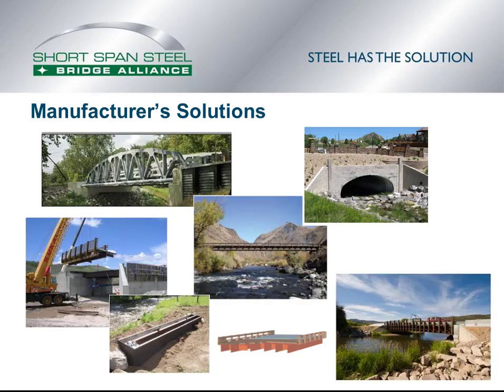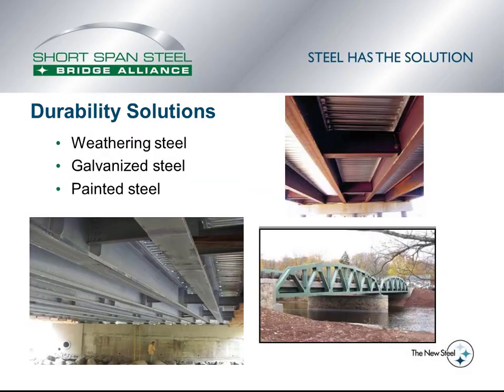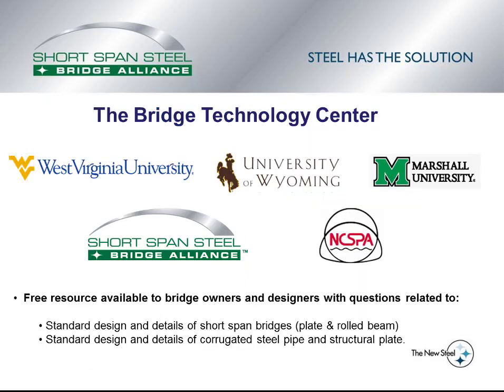Also included in an eSpan 140 solutions packet is information on corrugated steel pipe and structural plate standards, though that is not covered in this video. Shortspan Steel Bridge Alliance members have the opportunity to supply manufacturer solutions within the solution packet, which many counties have found useful for contacting manufacturers about their bridge projects. eSpan 140 also supplies durability solutions with information on weathering steel applications, galvanizing steel, and painted steel. eSpan 140 is supported by the Bridge Technology Center — a group of three universities — the Shortspan Steel Bridge Alliance members, and the National Corrugated Steel Pipe Association, which will address users' questions.